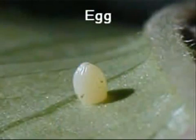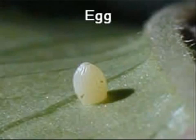A butterfly begins as a tiny egg. Female butterflies lay eggs on leaves and can lay as many as 500 at one time.